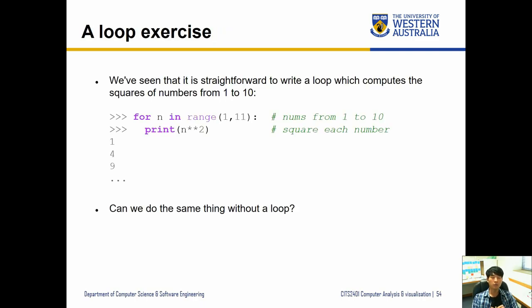Let's go back to Python and think about doing some list operations where we want to modify the content of the list. For example, we want to write a loop which computes the square of numbers from 1 to 10. But as we have seen using numpy scalar operations, we probably don't have to use a for loop to calculate this. Can we do the same thing without a loop?